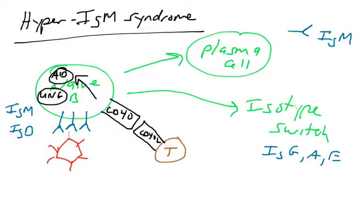Some individuals inherit genetic defects in any one of these four proteins. So if you're missing any one of these four proteins, if you're missing CD40, if you inherit genes that are defective and don't make CD40 properly, or you're missing CD40L, or you're missing AID, or you're missing UNG.